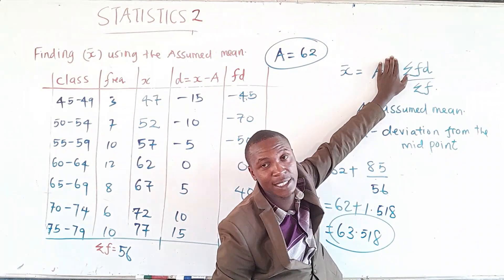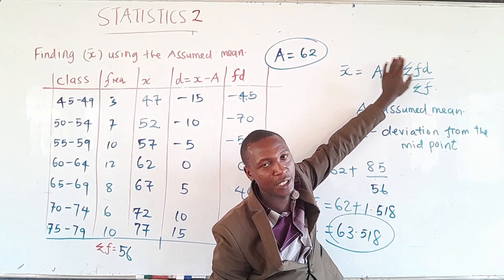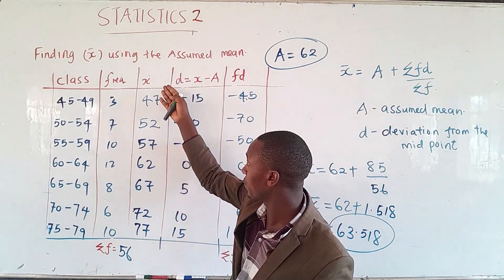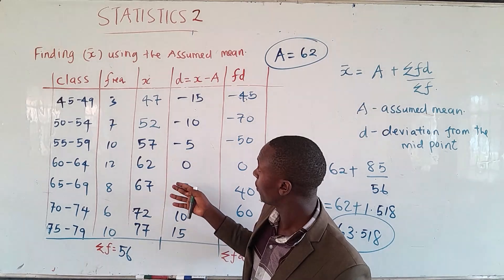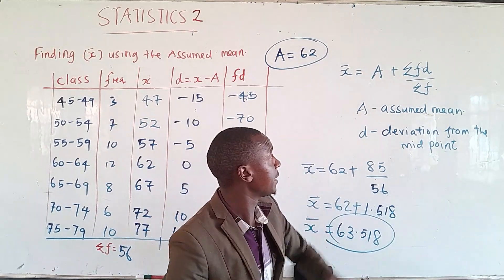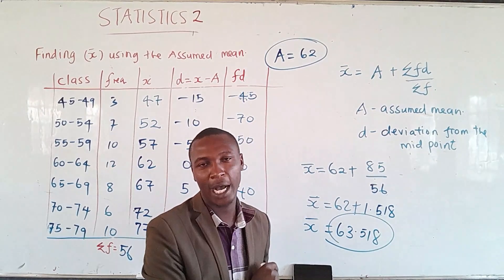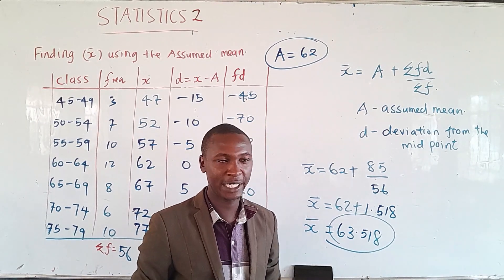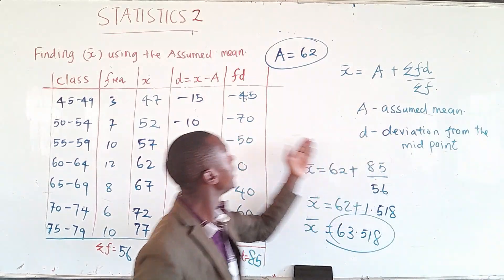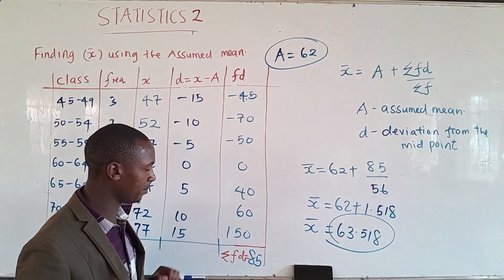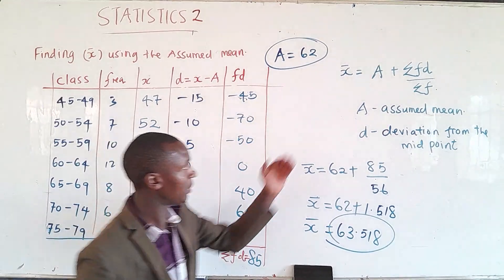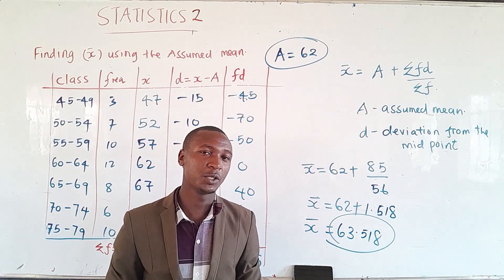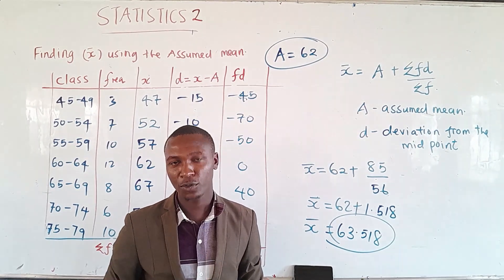This is the formula for finding the mean using the assumed mean: x-bar = a + (summation of fd) ÷ (summation of f), where 'a' is the assumed mean taken from the x (midpoint) values, and 'd' is the deviation showing how far each x value is deviated from the assumed mean. You sum the fd values, then apply the formula to get the mean. Please remember to like this video, share, and also subscribe.